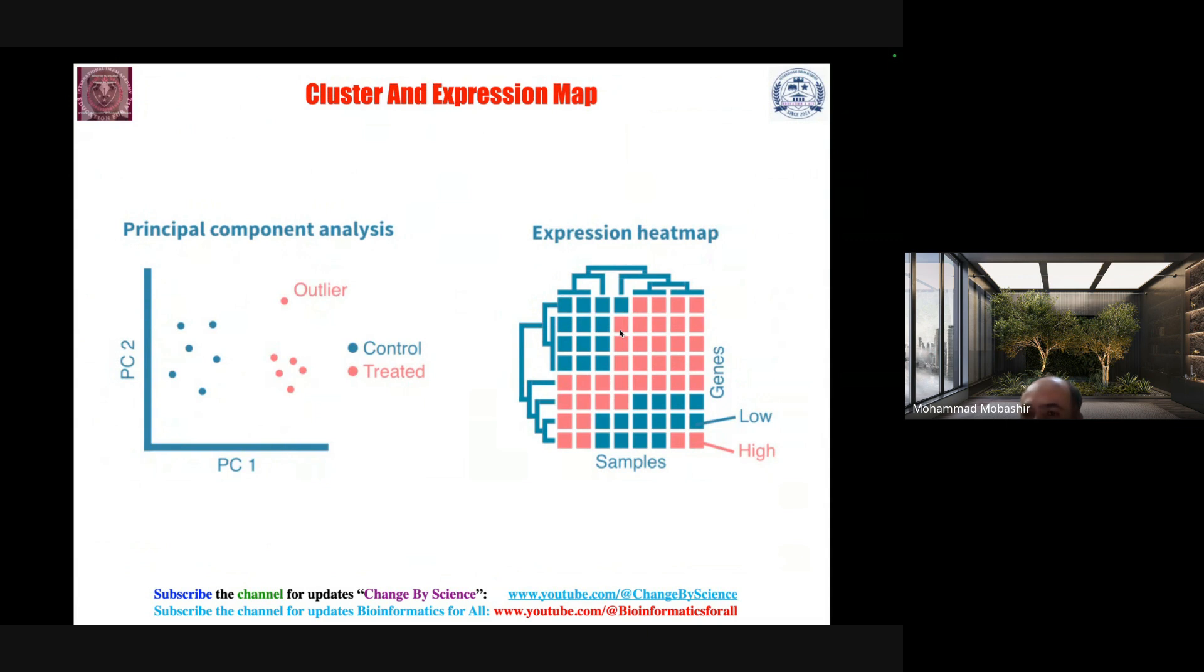Principal component analysis: here you have control and treated, then one is an outlier - that means it doesn't belong to any group. So PC1 versus PC2 in principal component analysis, there are different groups of comparison which you can perform. This is how you can look for visualization.